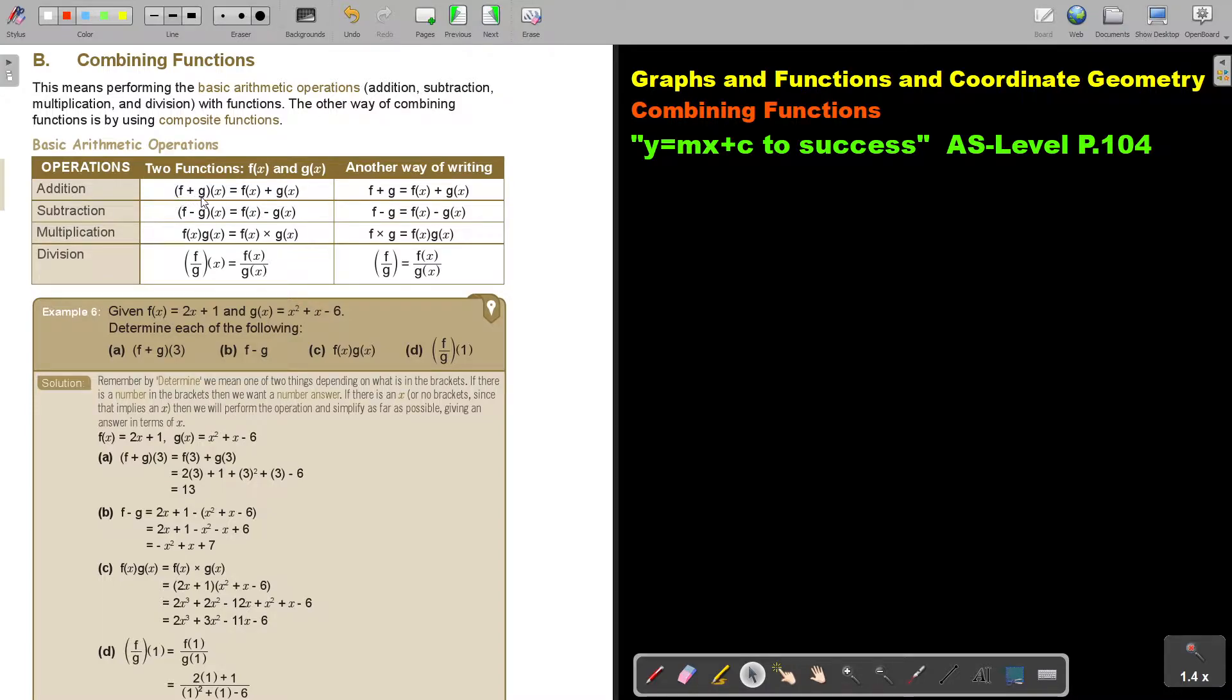Addition: they can either say it like this or they can separate the f and the g. Another way of writing is if they just leave out the x. Subtraction: combine or separate and leave out. Multiplication: they can just leave out the multiplier or they can put it in or they can do it like this. And then division: basically it's just, or they can separate it like this.